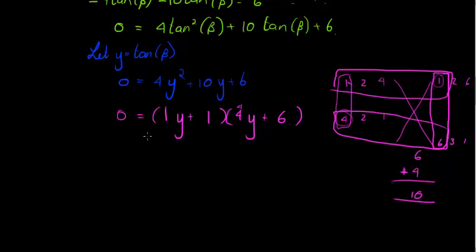This is equal to 0, so that I find either y is equal to negative 1, or y is equal to, when I solve this, negative 6 over 4 gives me negative 3 over 2.